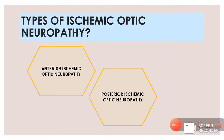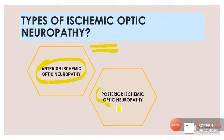There are two types of ischemic optic neuropathy: Anterior Ischemic Optic Neuropathy (AION) and Posterior Ischemic Optic Neuropathy (PION). Ischemia of the pre-laminar and laminar regions of the optic nerve head is referred to as AION, whereas ischemia of the intra-orbital part of the optic nerve is called PION. If you have any doubt regarding the parts of the optic nerve, I suggest you revise my video on optic nerve anatomy.